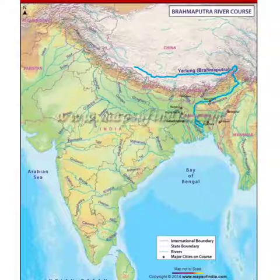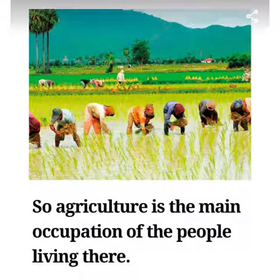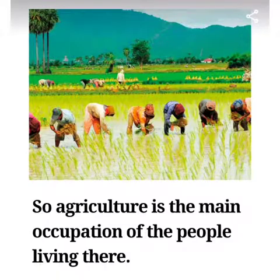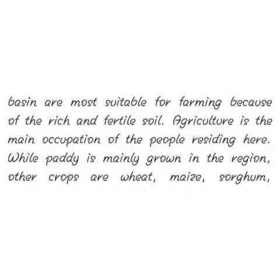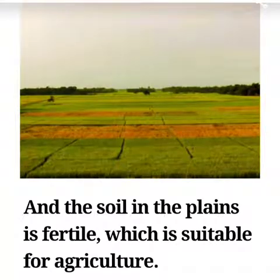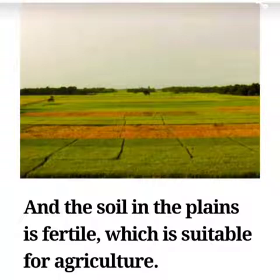Now, what is the occupation of the people of Brahmaputra Basin? Agriculture is the main occupation of the people of Brahmaputra Basin. Basins are most suitable for farming because of the rich and fertile soil. Paddy is mainly grown in this region. The soil in the plains is fertile, which is suitable for agriculture.